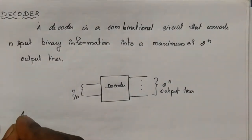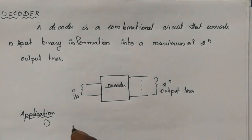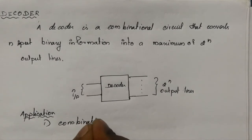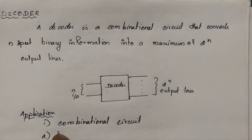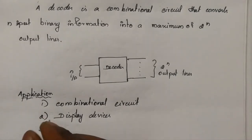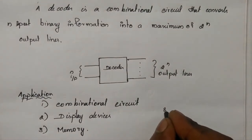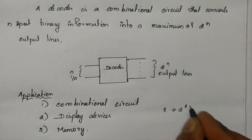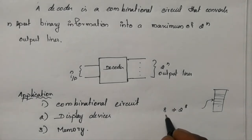Here are the applications. First, it is used to implement combinational circuits. Second, it is also used in display devices like 7-segment displays. Third, it is used in memory. Normally if you are having an 8-bit address line, we can address 2-power-8 memory locations. Selection of that particular location from this 8-bit input will be done using the decoder in memory.